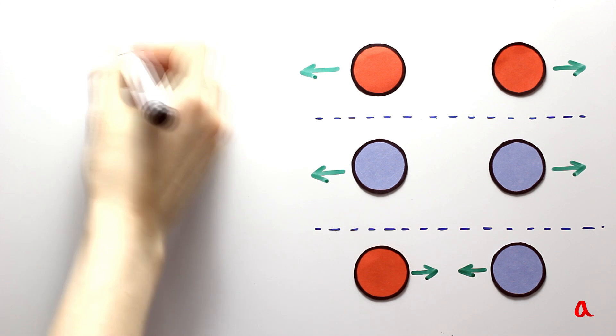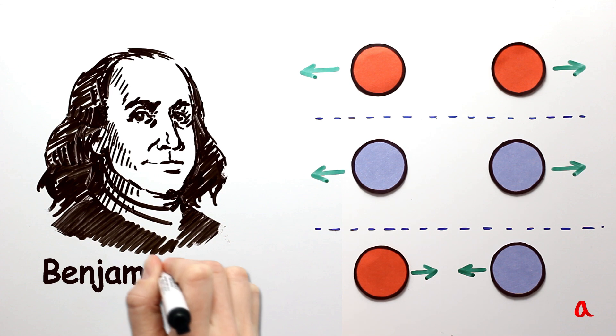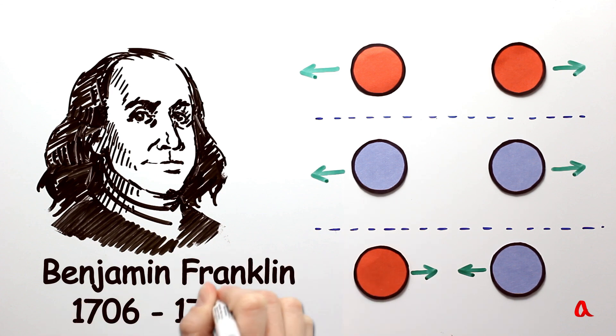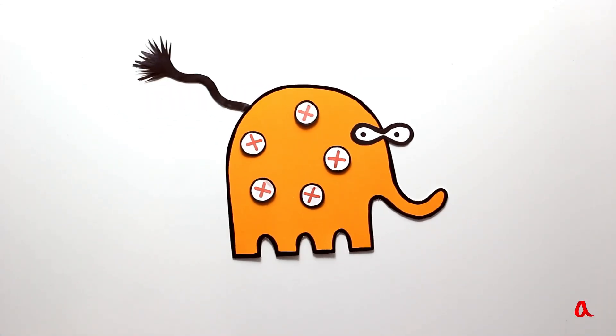A famous American public figure and scientist Benjamin Franklin suggested calling the two types of charges positive and negative. It is a matter of agreement which charge is to be considered positive and which negative. It is important that one can treat charges as positive and negative numbers. If a body is charged with plus 5 units and then minus 2 units, it will eventually have plus 3 units of charge.